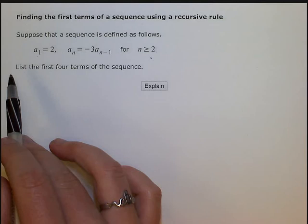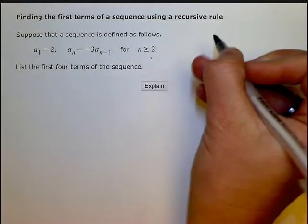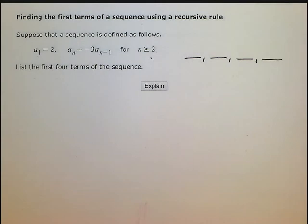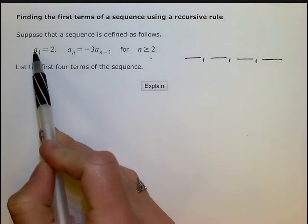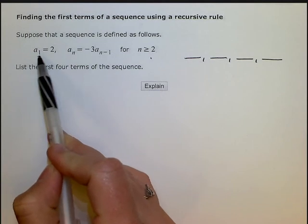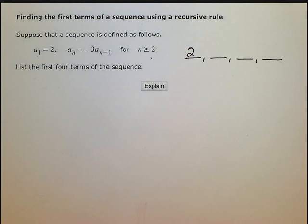So it says list the first four terms of the sequence. My answer needs to have four numbers like that. Now lucky for me, they tell me that the first term of the sequence, a sub 1, is 2. There's my first answer. That's a gimme.